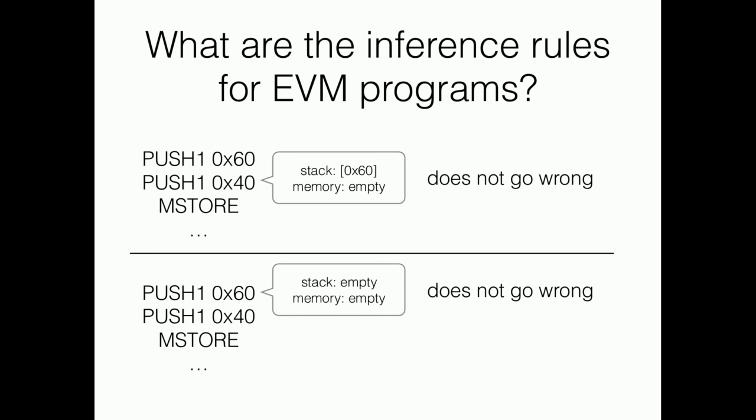What are the inference rules for EVM programs? Then, actually, I can answer. The inference rules would look like this. When, if you know, if your EVM is at the second position and the stack element is 0x60, if you know this state does not go wrong, then from this you can impart that an EVM machine at the first position with the stack empty does not go wrong. Because the only thing it can do is either go out of gas or go one step to the original, the second position I talked about. So this kind of inference rules are good for the EVM virtual machine.